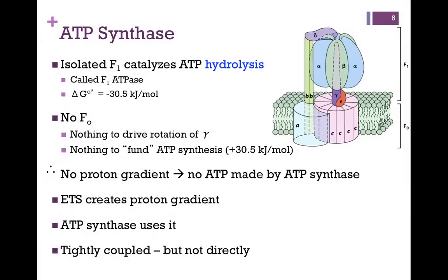If we separate the F1 domain — the portion that actually catalyzes the synthesis of ATP — from FO, it actually catalyzes ATP hydrolysis. This isn't too surprising when we consider that from a thermodynamic point of view, hydrolysis is highly favored over synthesis. If there is no FO domain, there's nothing to drive rotation of that gamma shaft. We're relying on the translocation of protons to provide the energy to make ATP. If we can't translocate protons, we can't make ATP. The bottom line is, if there is no proton gradient, we can't make ATP by this method.